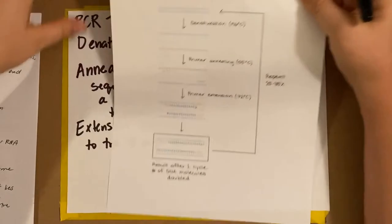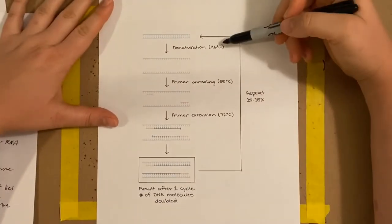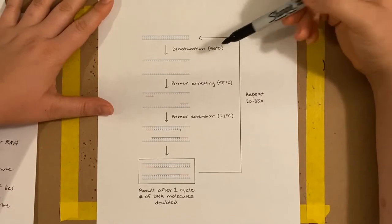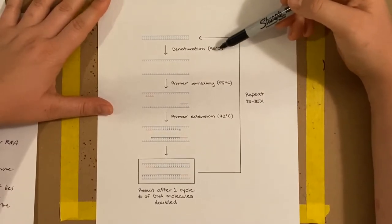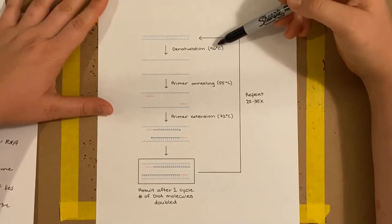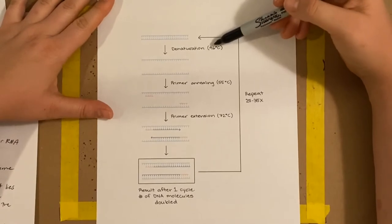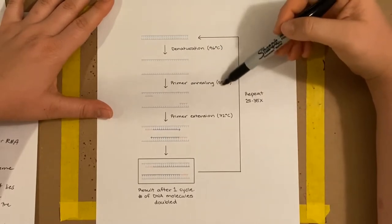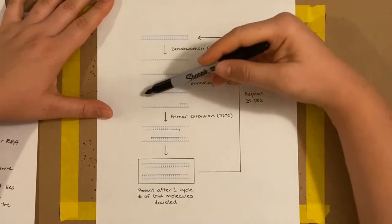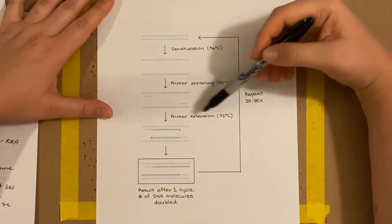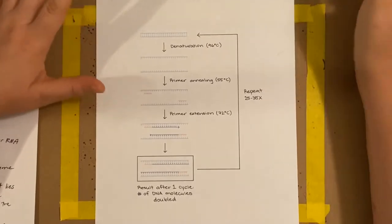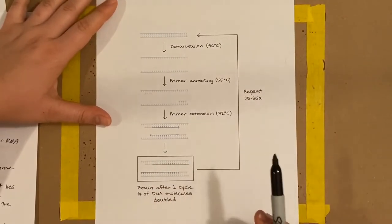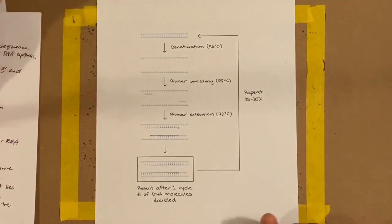This is what the whole process looks like. First you denature by heating to 96 degrees Celsius — very hot — so the strands separate. Then you add the primer by reducing the heat so primers will bind. Then at 72 degrees Celsius, extension occurs: DNA polymerase comes in and starts adding nucleotides. Your result is that you now have four strands of DNA where you only had two strands.